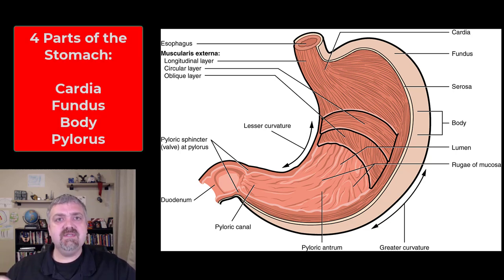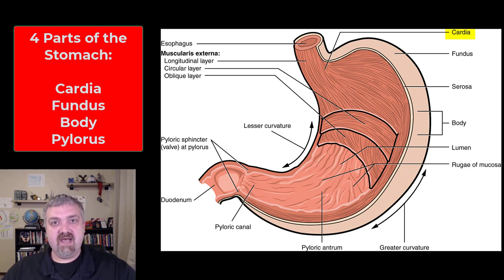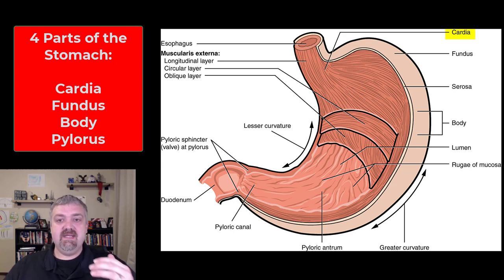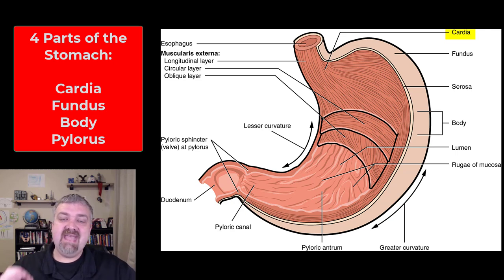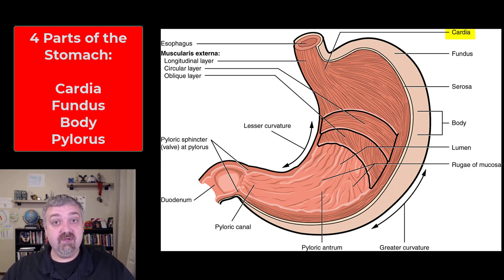So the four parts of the stomach you see here: we have the cardia, the fundus, the body, and the pylorus. The cardia is the portion of the stomach that's attached to the esophagus. When you think about the stomach and the esophagus, you think of the gastroesophageal sphincter or the lower esophageal sphincter — that's what separates the two.